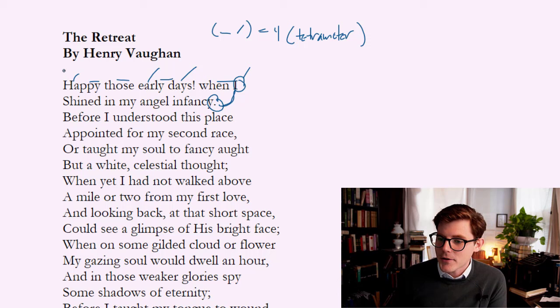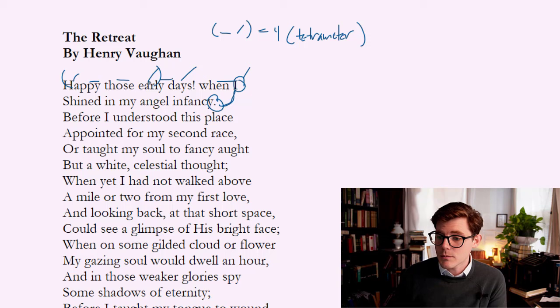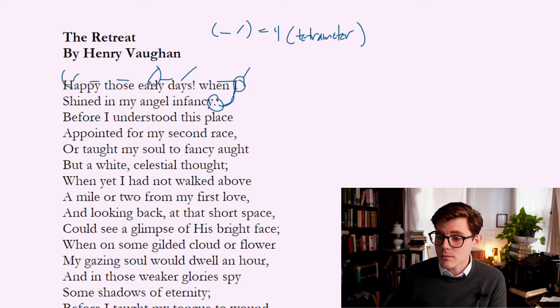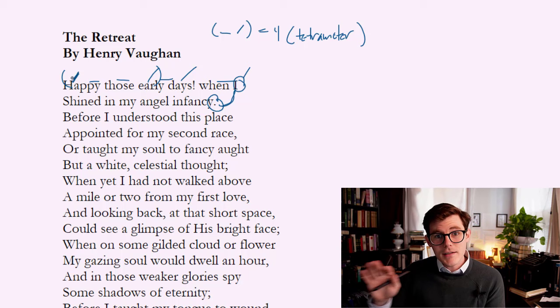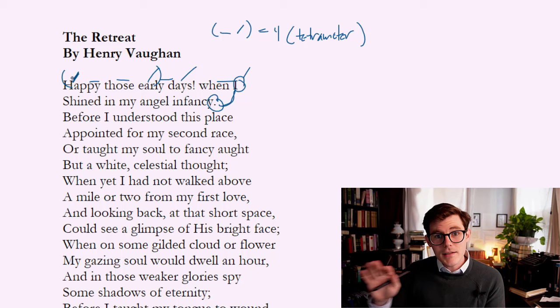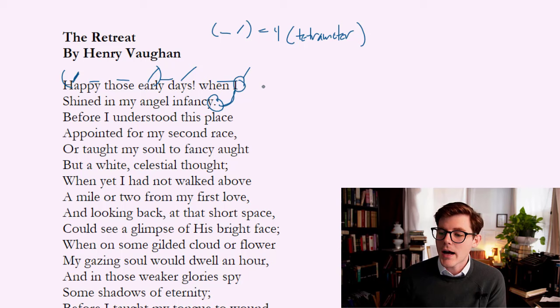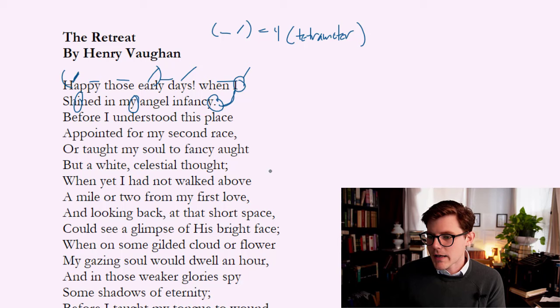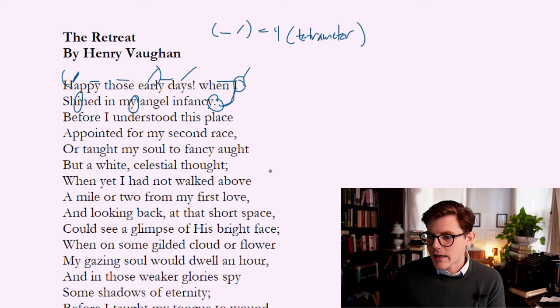This pattern of trochee followed by iamb has a nice swing to it, and he'll incorporate this pattern again in the second verse paragraph. The trochee here has the effect of leaping — 'Happy those early days' — signaling a sense of excitement. Notice the long 'i' sound repeated in 'shined in my' and at the end of 'infancy.' The speaker is looking back to those early days, perhaps to childhood, perhaps to something else as we'll see.